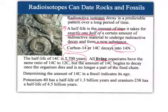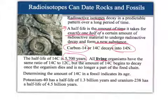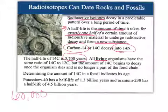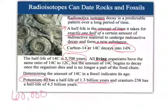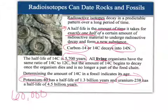When an organism dies, it is no longer incorporating carbon, so the carbon-14 starts to decay. Since all living organisms have the exact same ratio of carbon-14 to carbon-12, we can measure how long it has decayed to determine the age of the organism. Carbon-14 is only good for fossils up to about 60,000 years old. For anything older, you use isotopes with a longer half-life, such as potassium-40 with a half-life of 1.3 billion years, or uranium-238 with a half-life of 4.5 billion years.